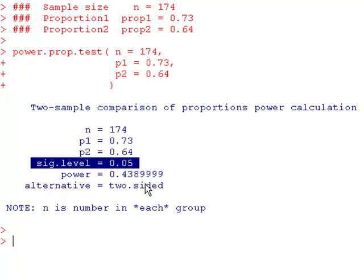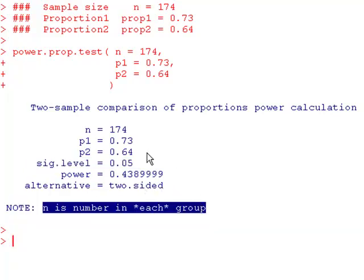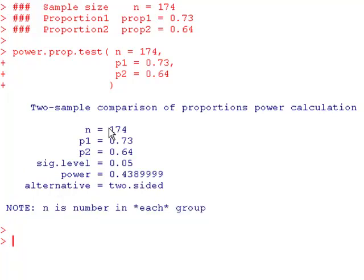Okay, now notice that it is assuming that n is the number in each group, not your total sample size. So that means you pulled a sample of 174 from population 1 and a sample of 174 from population 2. But our power is 0.4389, which means in this scenario, if there's really a difference between these two population proportions, we'd be able to find it about 43% of the time.